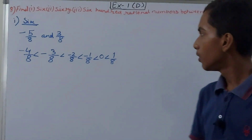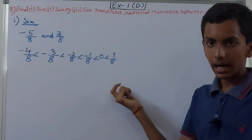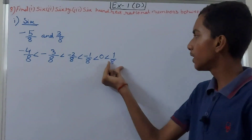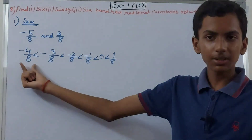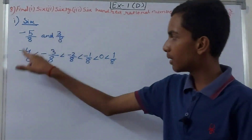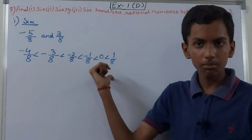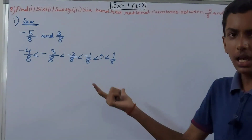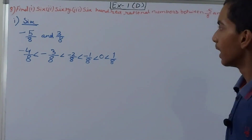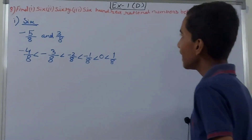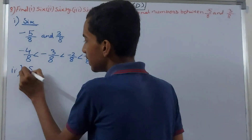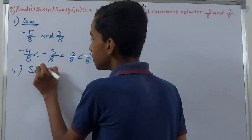But if you increase one number on one side, you have to decrease one number on the other side, because you want exactly six numbers — keep that in mind. Now next we will find 60 rational numbers.